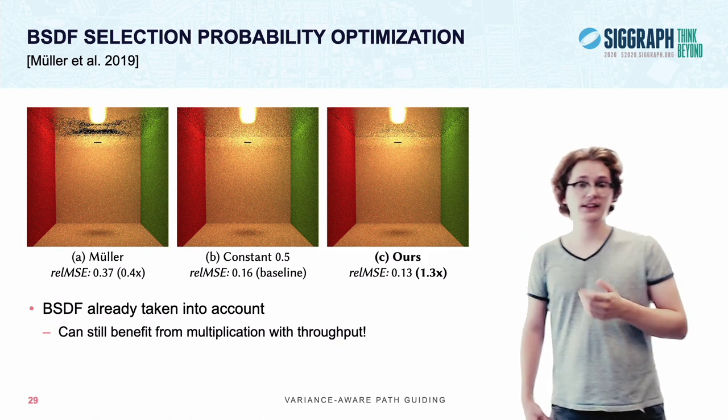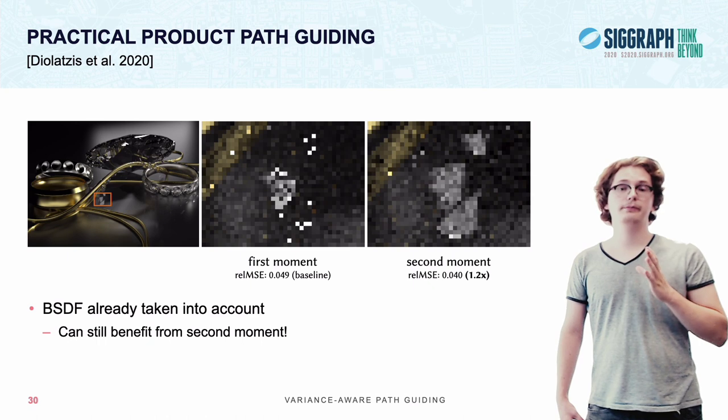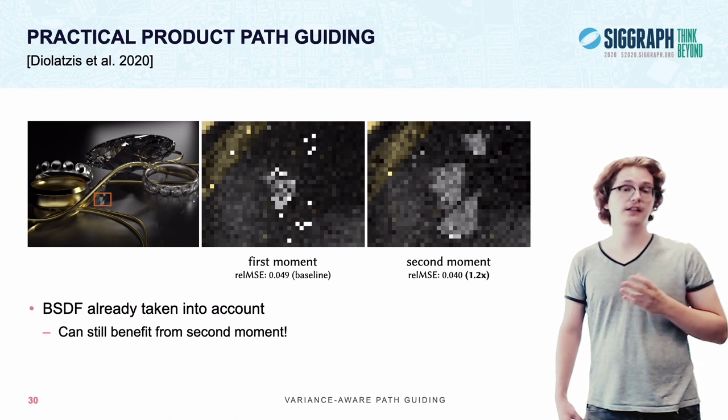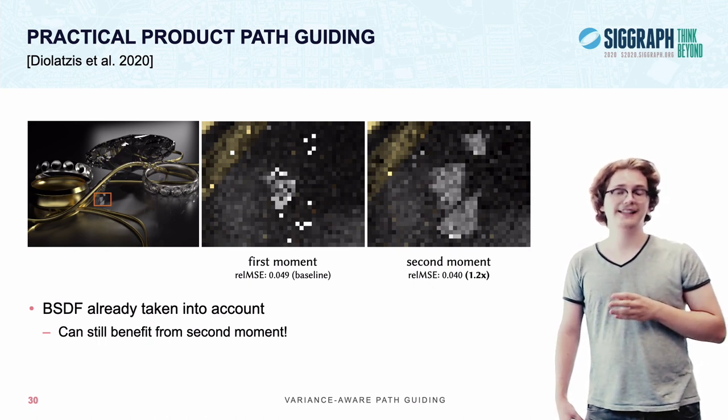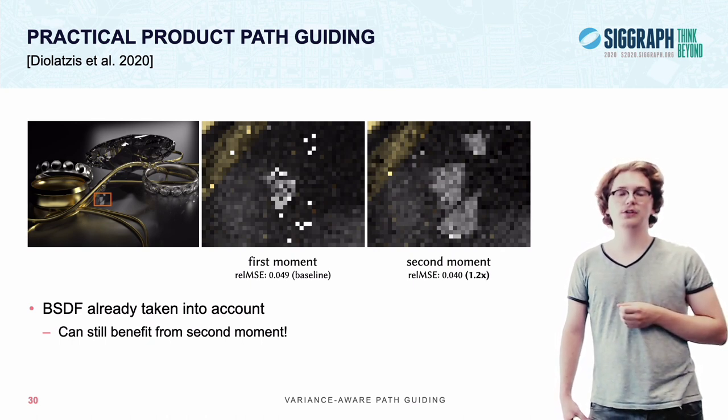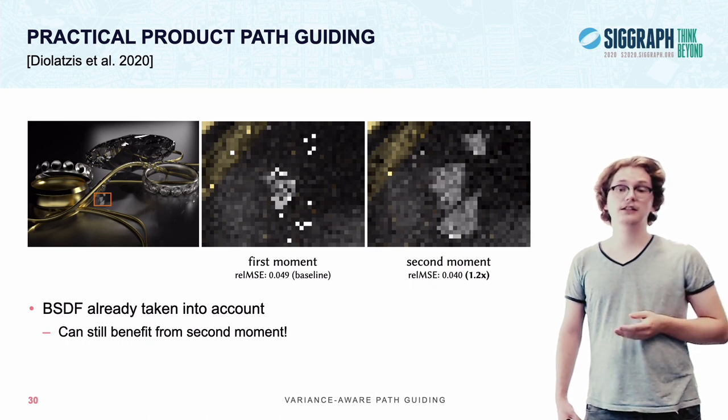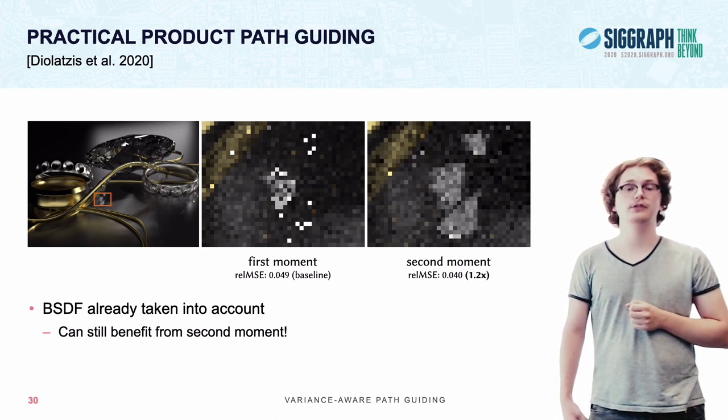Now, last but not least, there is also product path guiding, where we have shown that even though product path guiding takes the BSDF already into account, there can still be noise due to approximation errors in the guiding distribution, or even unguided decisions like in the necklace scene, for which it makes sense to also take the second moment into account.